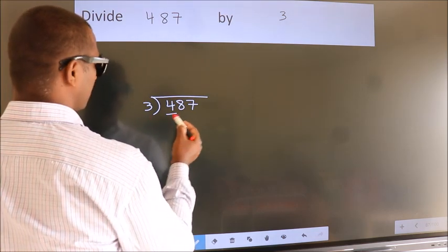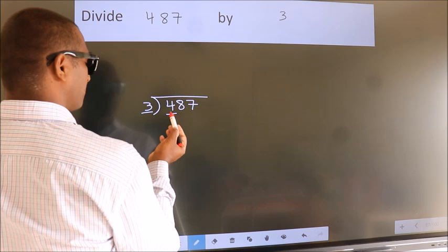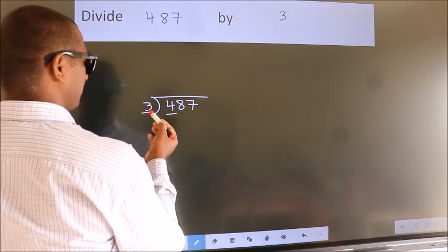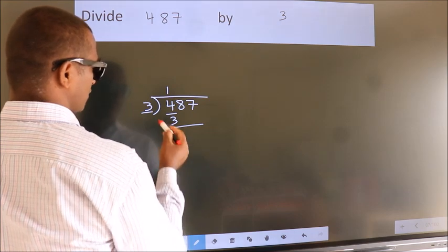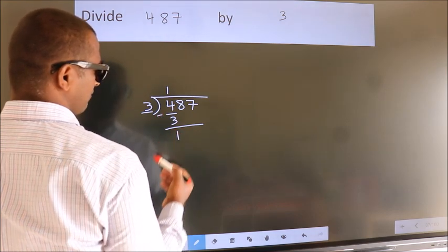Here we have 4, here 3. A number close to 4 in 3 table is 3 once 3. Now, we should subtract. We get 1.